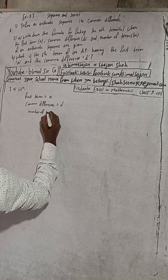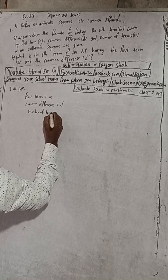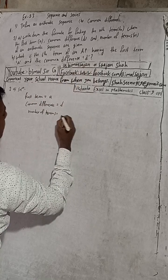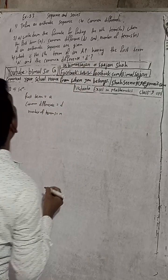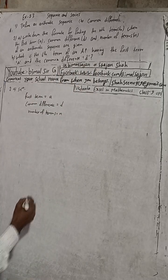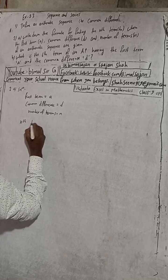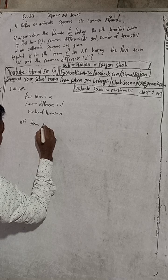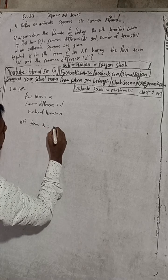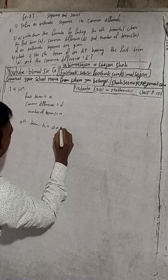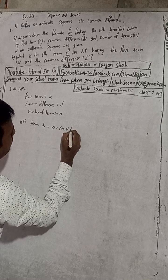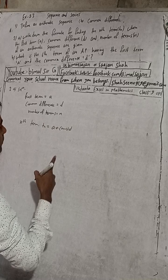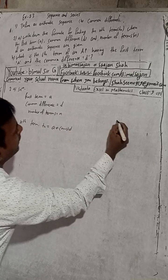Number of terms is given here n. Now write down the formula for the nth term. So nth term tn is equal to a plus n minus one into d. This is the formula.